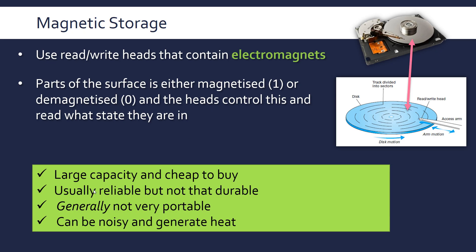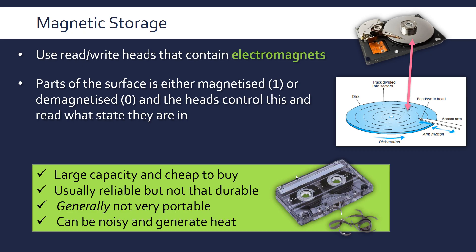Hard drives are generally not very portable, though there are exceptions — cassettes and magnetic tape, which aren't used anymore, would be very portable, and external disk drives are also magnetic but more portable. Because hard drives are mechanical — the disk is physically spinning — they are often quite noisy and also generate heat, which is a major disadvantage. Usually, though, the large capacity and low cost outweigh the other disadvantages.